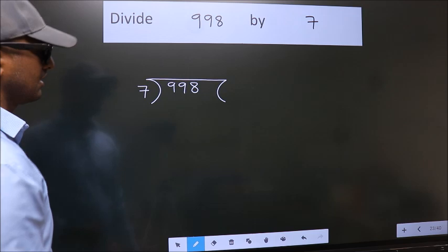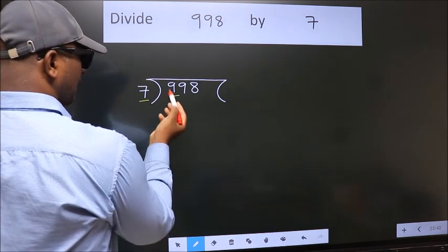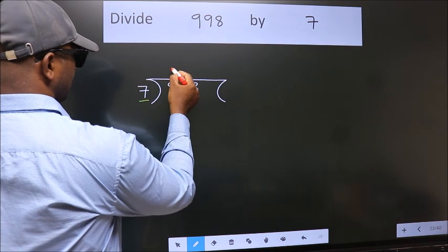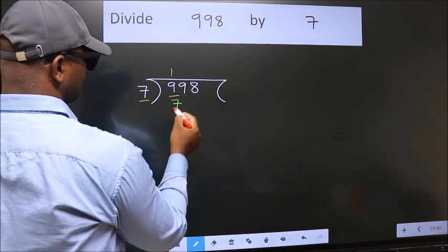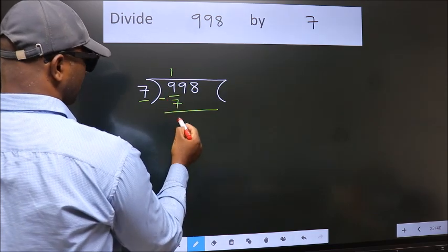Next, here we have 9 and here 7. A number close to 9 in the 7 table is 7 ones, which is 7. Now we should subtract. We get 2.